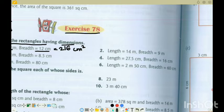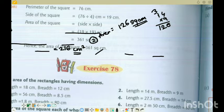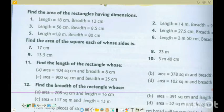Next question 2. Length is 14, breadth is 9. So question 2 we can solve. Area will be equal to length into breadth, which is 14 into 9. 9 times 4 is 36, 9 times 1 is 9. 10, 11, 12. So 126 square centimeter. You can write square centimeter or centimeter square, or to the power of 2.